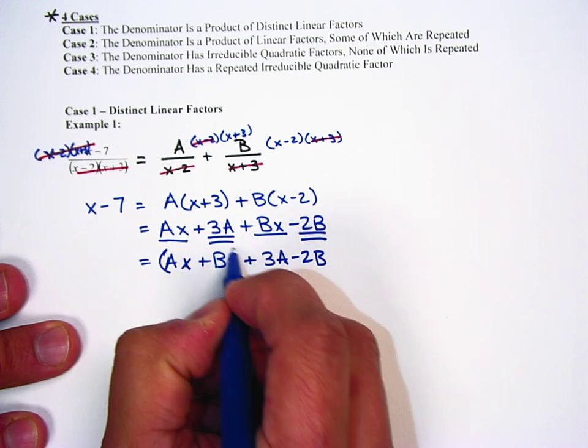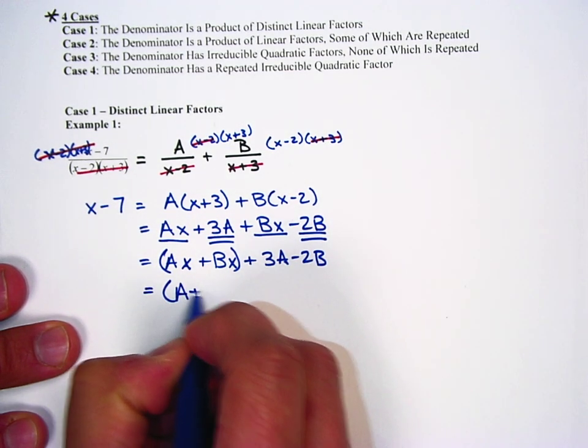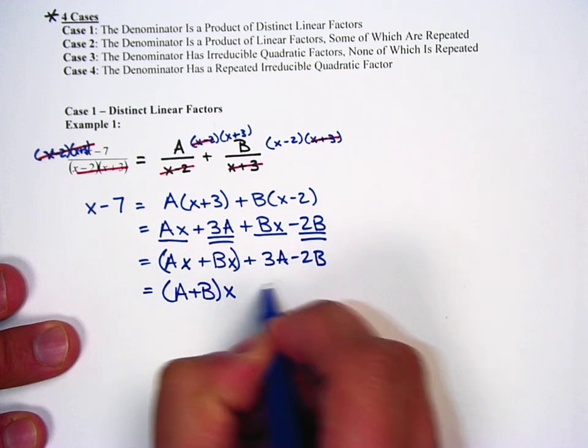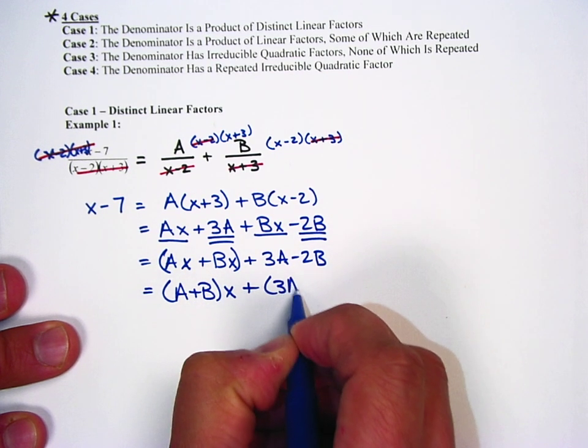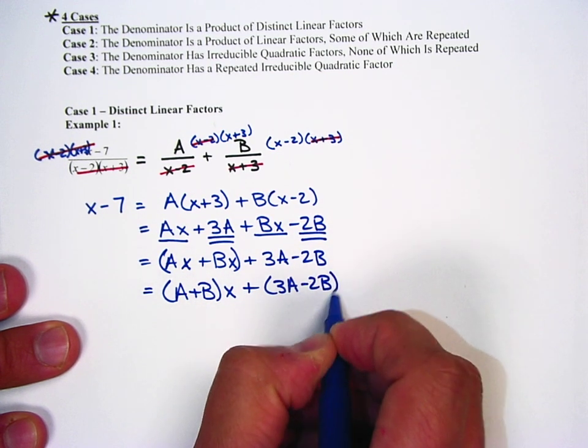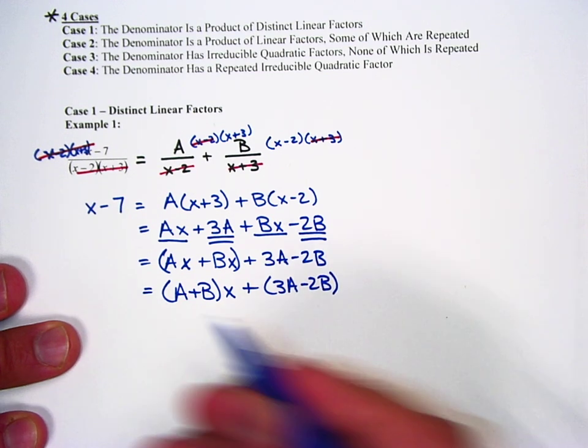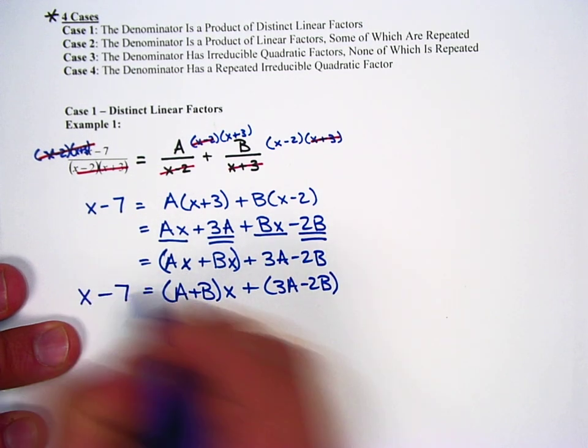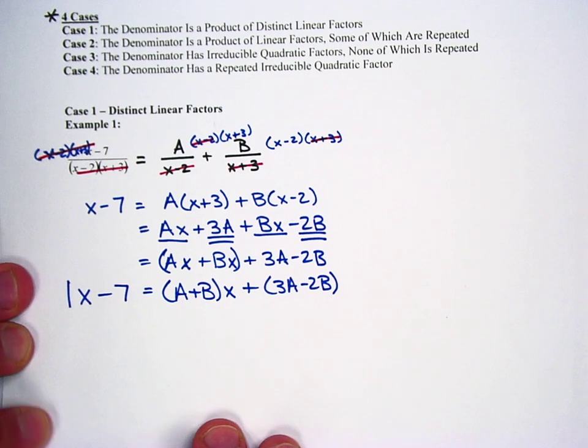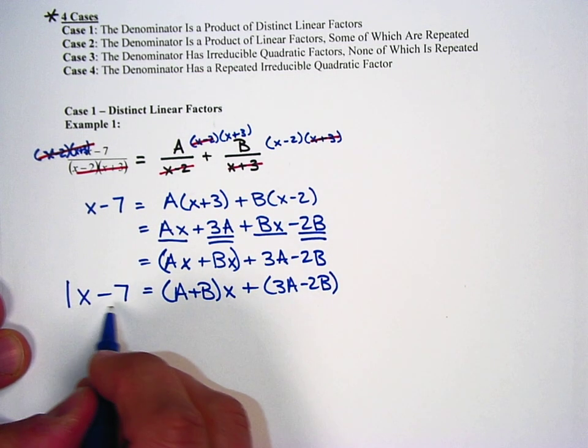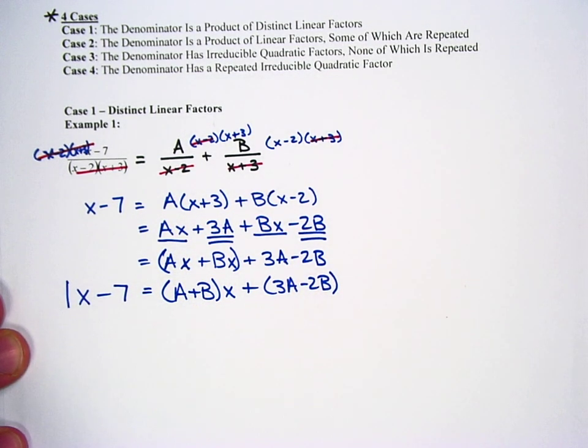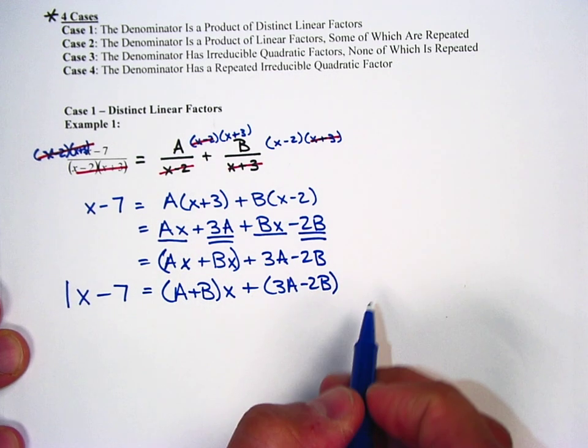Now because these are both x terms, I can factor out an x. A plus B times x plus 3A minus 2B. Now bringing down this x minus 7, and putting a 1 coefficient in there, we know that 1x minus 7 is equal to A plus B times x plus 3A minus 2B.